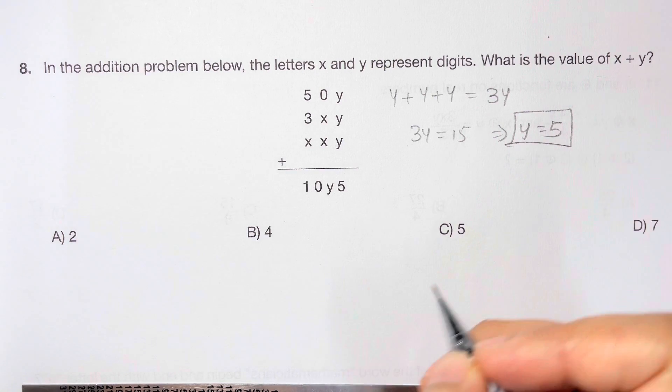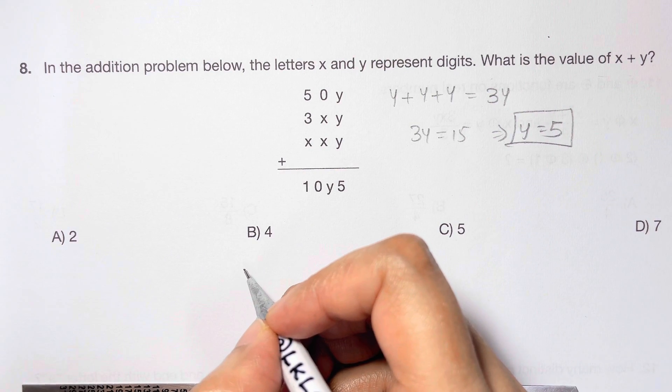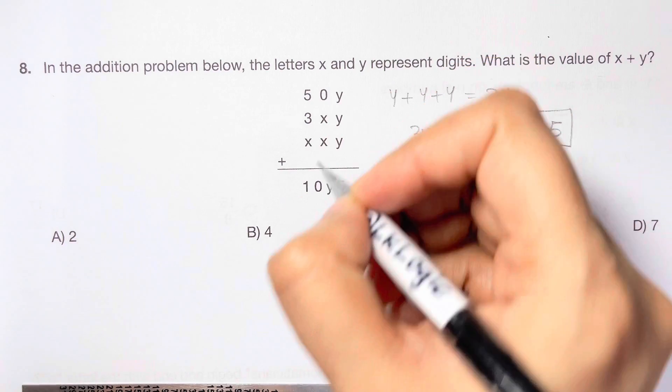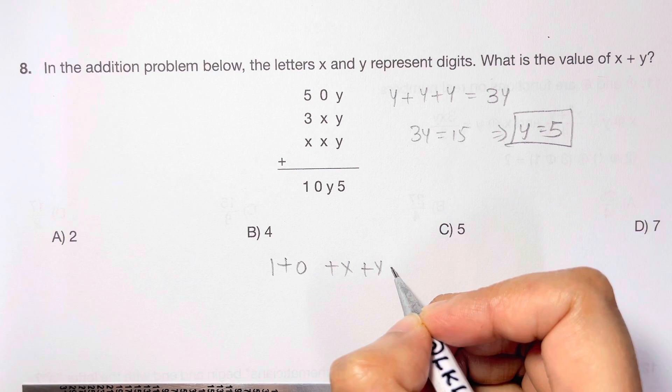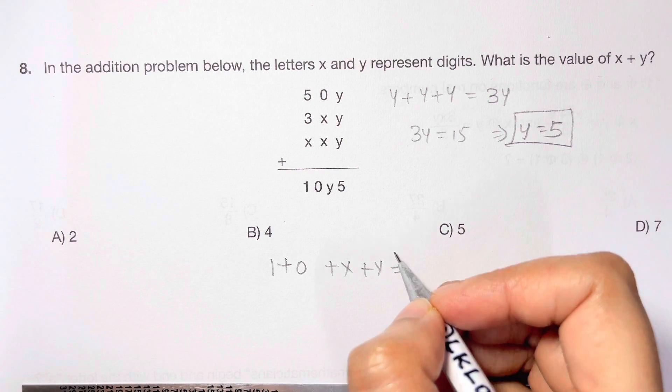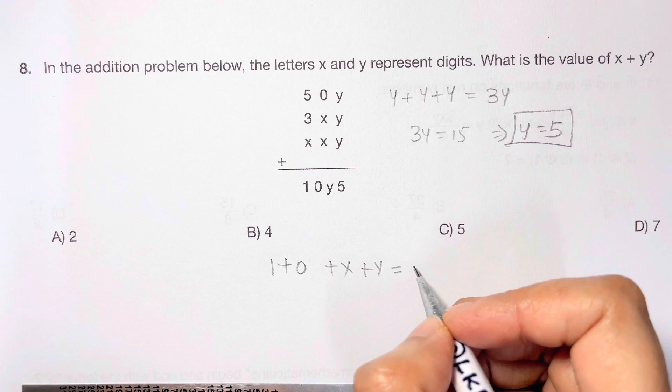We've got the first one. What about the tens digits of this one? 1 plus 0 plus x plus x is equal to y and y is equal to 5.